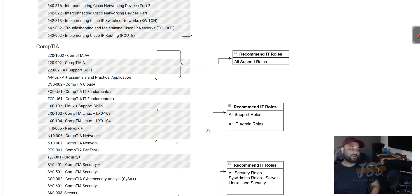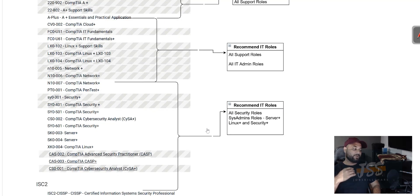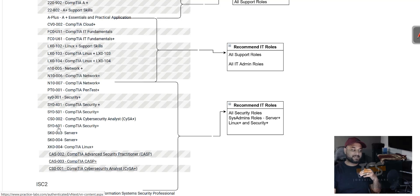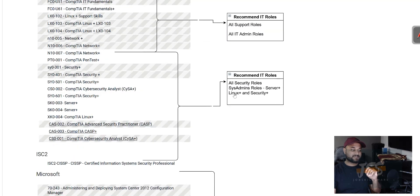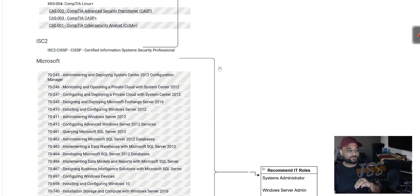Linux, Cloud Plus, and similar topics are things a sysadmin will also be touching, so those fall under 'all admin roles.' Then we compile all security roles into one section — you'll see PenTest, Security+, at different certification levels. The most current one in practice lab is 601. On the Microsoft side, most labs target sysadmin or Windows Server admin roles. We've tagged everything to make it easy.